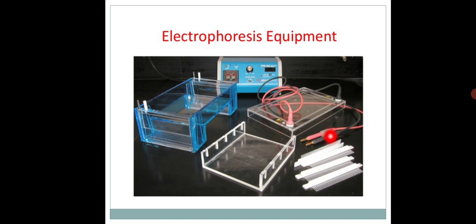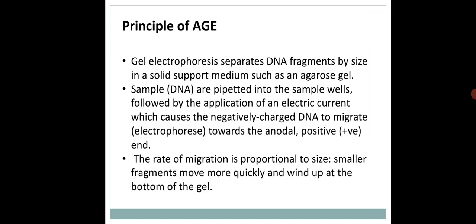Anode is the red wire and cathode is the black wire. The anode is positively charged and the cathode is negatively charged. Since DNA is a negatively charged biomolecule, it will move from cathode to anode — from negative to positive.